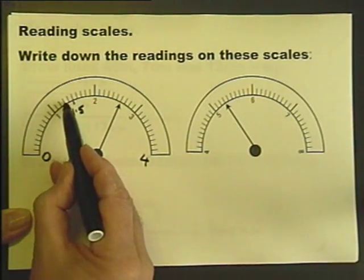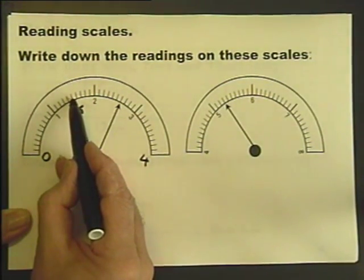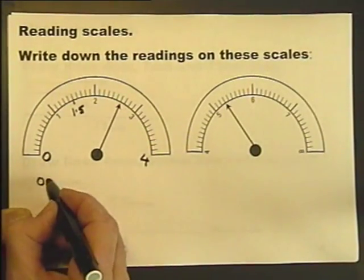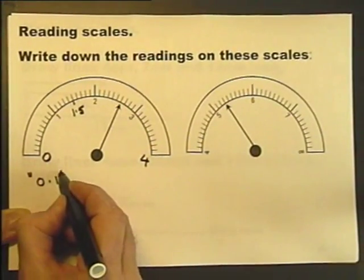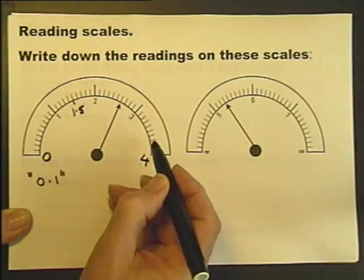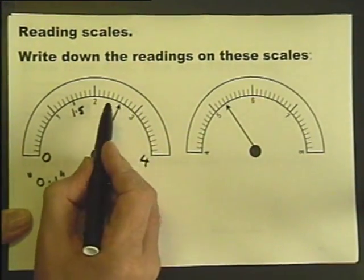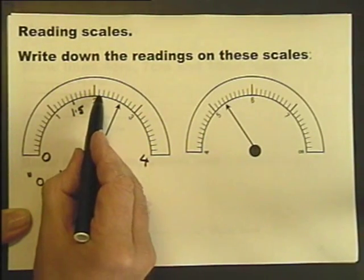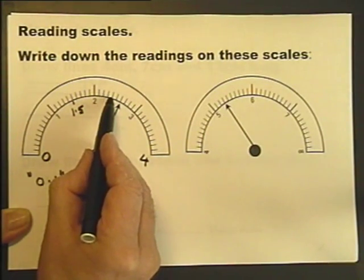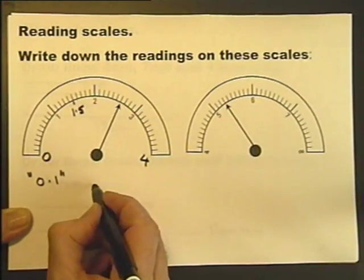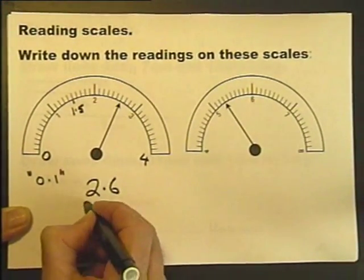So it's 1.1, 1.2, 1.3, 1.4, 1.5. So it's going up in 0.1 steps. So before you can read a scale, you've got to figure out the scale. Once you've done that, we're away. So this is going 2.1, 2.2, 2.3, 2.4, 2.5, 2.6. So that one is reading 2.6.